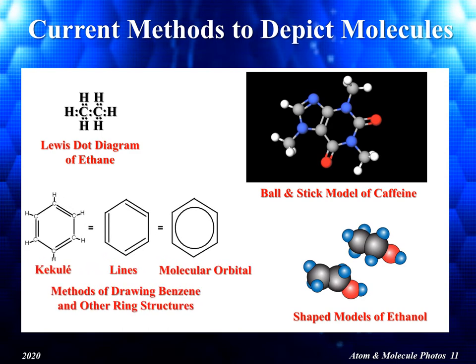Today, there are several methods used to draw benzene and other molecules that use the benzene ring. In the lower left, the Kekulé drawing is shown. However, most chemists today use the line drawing for benzene and other ring structures. This drawing does not show the hydrogen atoms, while the carbon atoms are represented as the corners of the hexagon and the lines depict the single and double bonds. Other chemists use the molecular orbital version, where the sharing of electrons is shown as a circle within the hexagon.